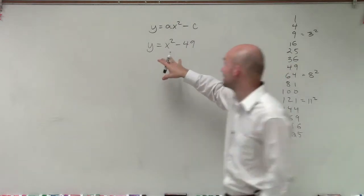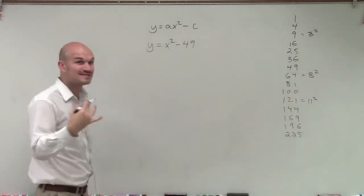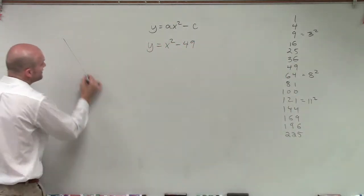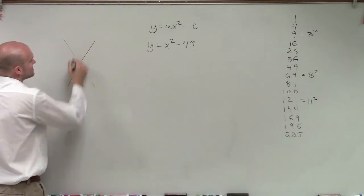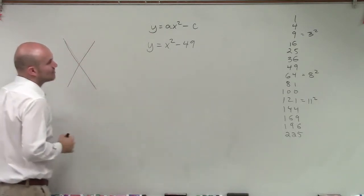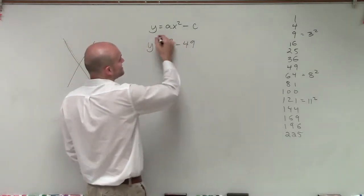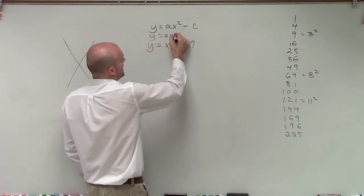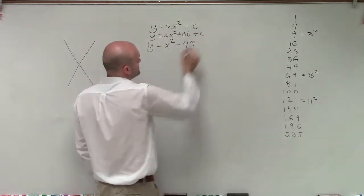The important thing I want you guys to understand is when we have the difference of two squares, we still have a b, and we can still use the previous methods that we've discussed on how to factor trinomials. Remember, this is the same thing as y equals ax squared plus 0b plus c.